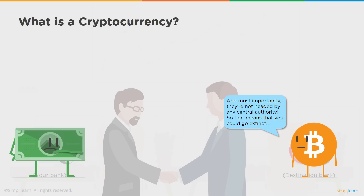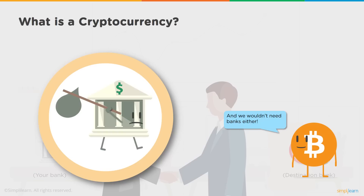The transactions are safe and secure, and most importantly they are not headed by a central authority. That means cash could go extinct and we might not even need banks. The basic benefit with the evolution of cryptocurrency has been the low transaction cost. The underlying concept is the removal of intermediaries, which reduces transaction costs between parties — because more middlemen means more cost added to every transaction.